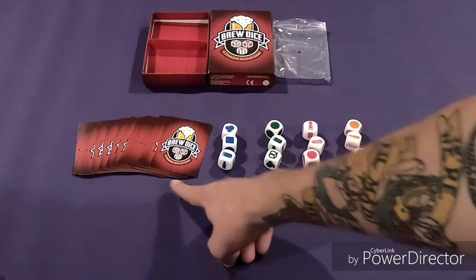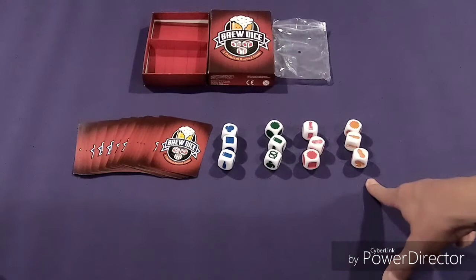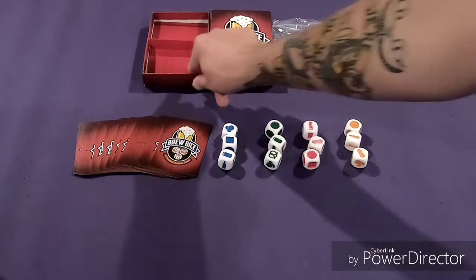Let's take a look at what's inside the box. Inside the box we have a deck of cards and four sets of dice: blue, green, red, and yellow. This is up to a four-player game.